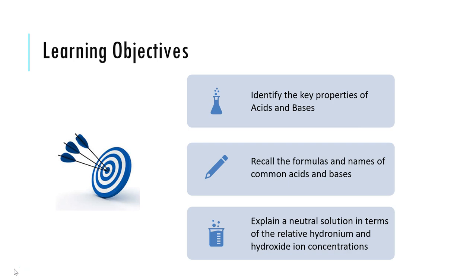So the learning objectives for this video and the supplementary work that you'll be doing are so that you're able to identify the key properties of acids and bases, be able to recall the formulas and names of a number of different common acids and bases, and also be able to explain how a neutral solution forms in terms of the relative amount of hydronium and hydroxide ion concentrations. Generally, we've referred to things like pH specifically when talking about this, so we're going to take that idea of pH and be looking at more about what it looks like on the molecular level.